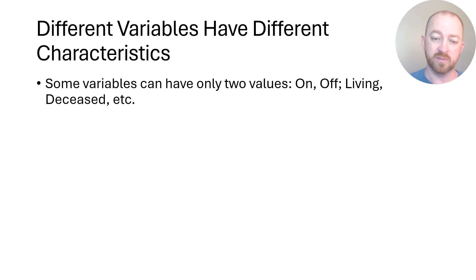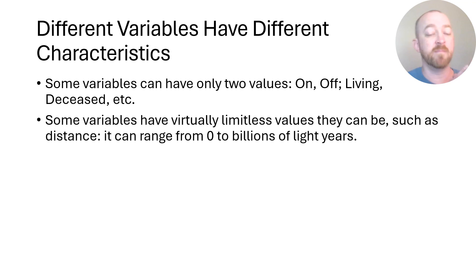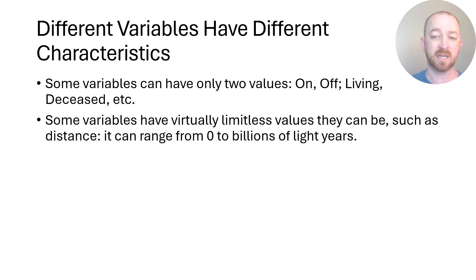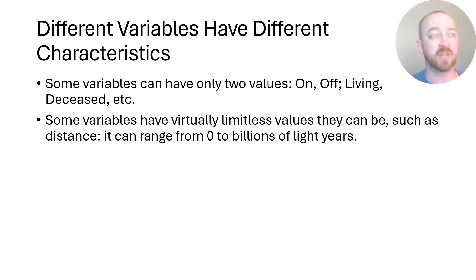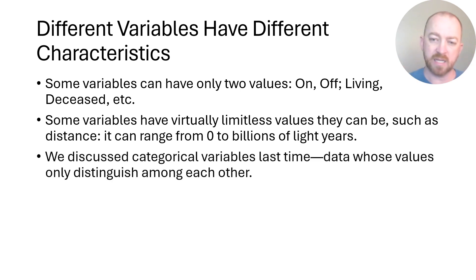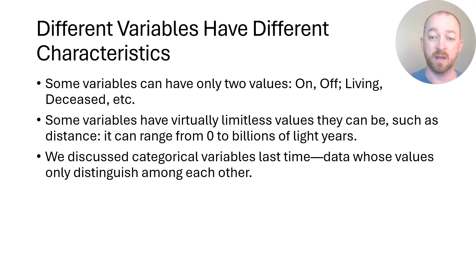There are also variables that have multiple values that just distinguish among each other. Some other things have multiple values they can take on — in fact almost limitless, and in some cases actually infinite. For example, distance is an excellent example of an inherently continuous variable because it can go from zero to almost infinity. You can go billions of light years or just a few feet, a few inches, even some nanometers. A variable has to have at least two values or it's not a variable, and variables can have multiple or infinite values as well.